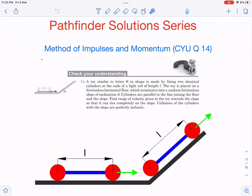This toy is placed on a frictionless horizontal surface which terminates into a uniform frictionless slope of inclination theta. The cylinders are parallel to the line joining the floor and the slope, as you can see from the diagram.